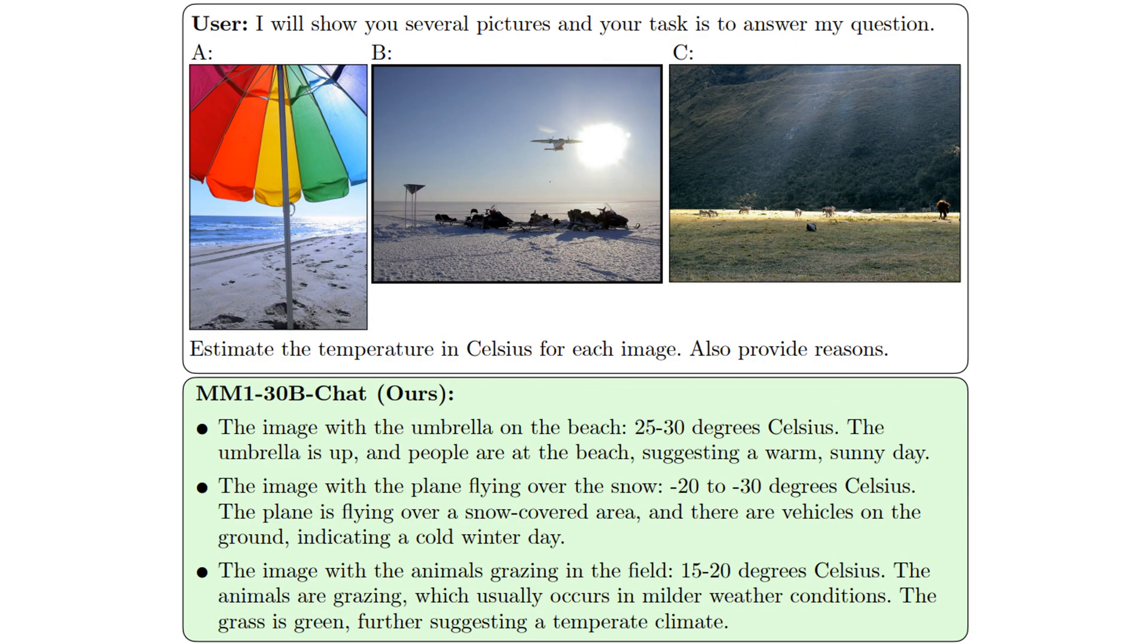This is the last experiment that we discuss in this video. Three images are presented to the MM1, and it is asked to estimate the temperature in each image. In the MM1 response, the temperature is estimated to be 25 to 30 degrees in the left image, which is a scene on a beach, minus 20 to minus 30 degrees in the middle image, which is a snowy mountain, and 15 to 20 degrees in the right image, which shows animals grazing.